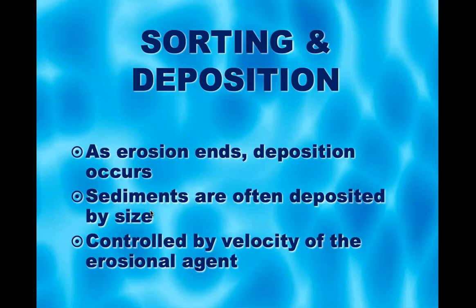If you get downstream somewhere and the stream is flowing slower — it's lost some velocity, some system energy — what is the first thing that stream is going to drop? The heavy stuff, the pebbles, not the tiny light silts and clays. It drops the big stuff first as it runs out of energy. This is sorting.